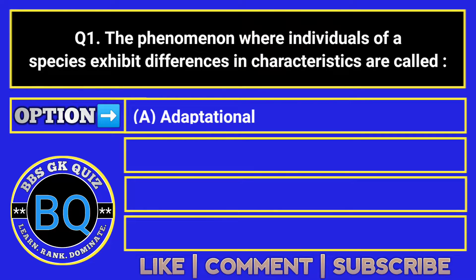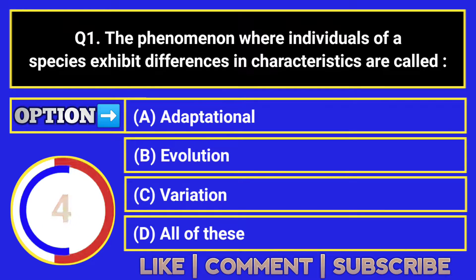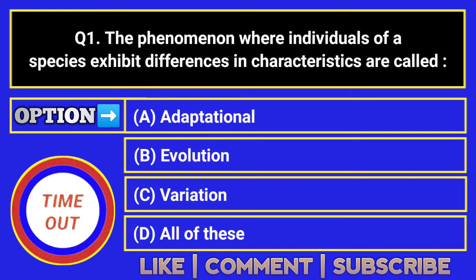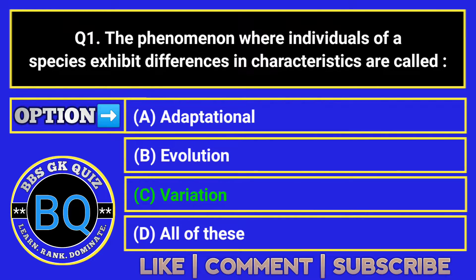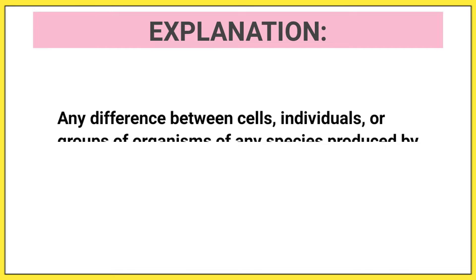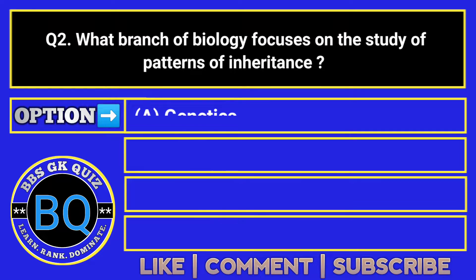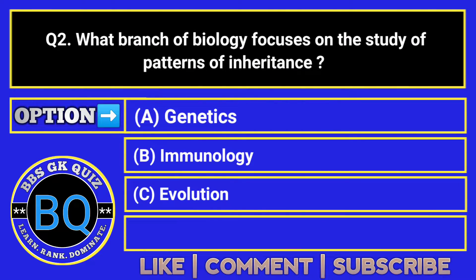The phenomenon where individuals of a species exhibit differences in characteristics are called — the correct answer is Option C. Any difference between cells, individuals, or groups of organisms of any species produced by genetic differences is called genotypic variation.